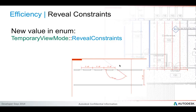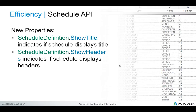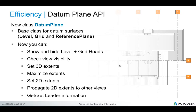There's also new functionality to reveal the constraints, some enhancements in the schedule API to control the title and header displays, and a new datum plane base class for levels, grids, and reference planes which provides additional functionality.